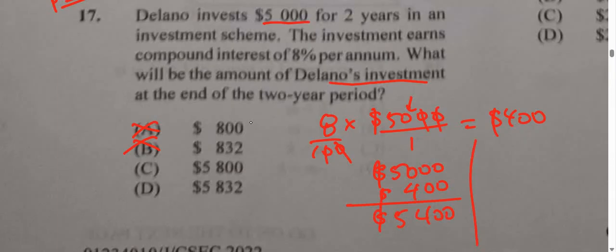Now, with compound interest, the interest is charged on the new amount. The new amount is $5,400. It's not charged in this case but added on, because this person is actually saving money — so the bank is paying him 8% on his new amount, 8% on $5,400.